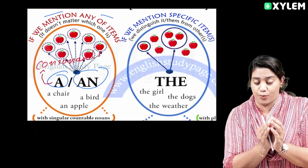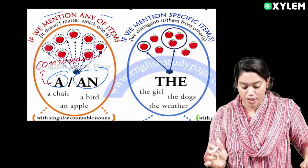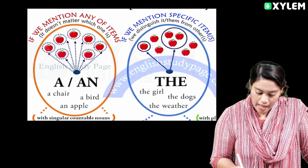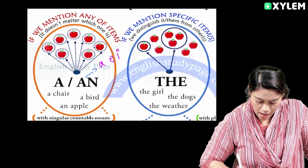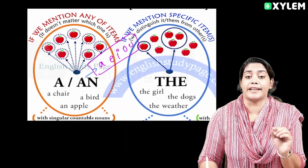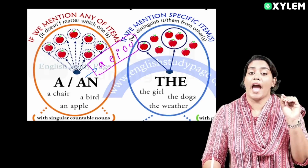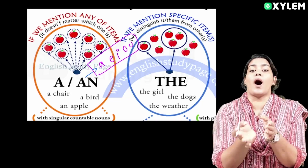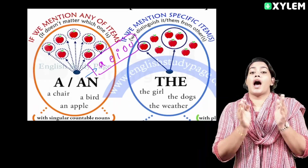We use 'an' for vowels — vowel sounds. The vowels are A, E, I, O, U. We use 'an' before words starting with these vowel sounds. An apple. An umbrella. An ink bottle. That's why we use 'an' for vowel sounds. That is the indefinite article.